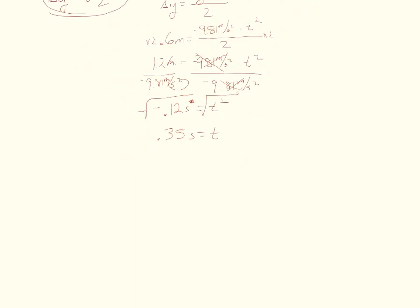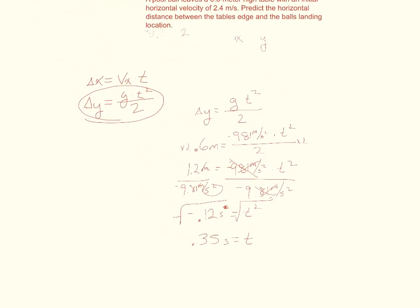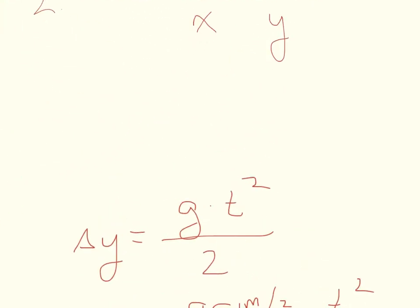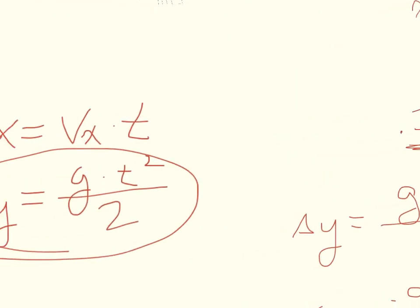Now that we have this piece of information we can go back to our step 2 which was writing down the variables and I can put in my time as 0.35 seconds and I can then use this in this other equation.